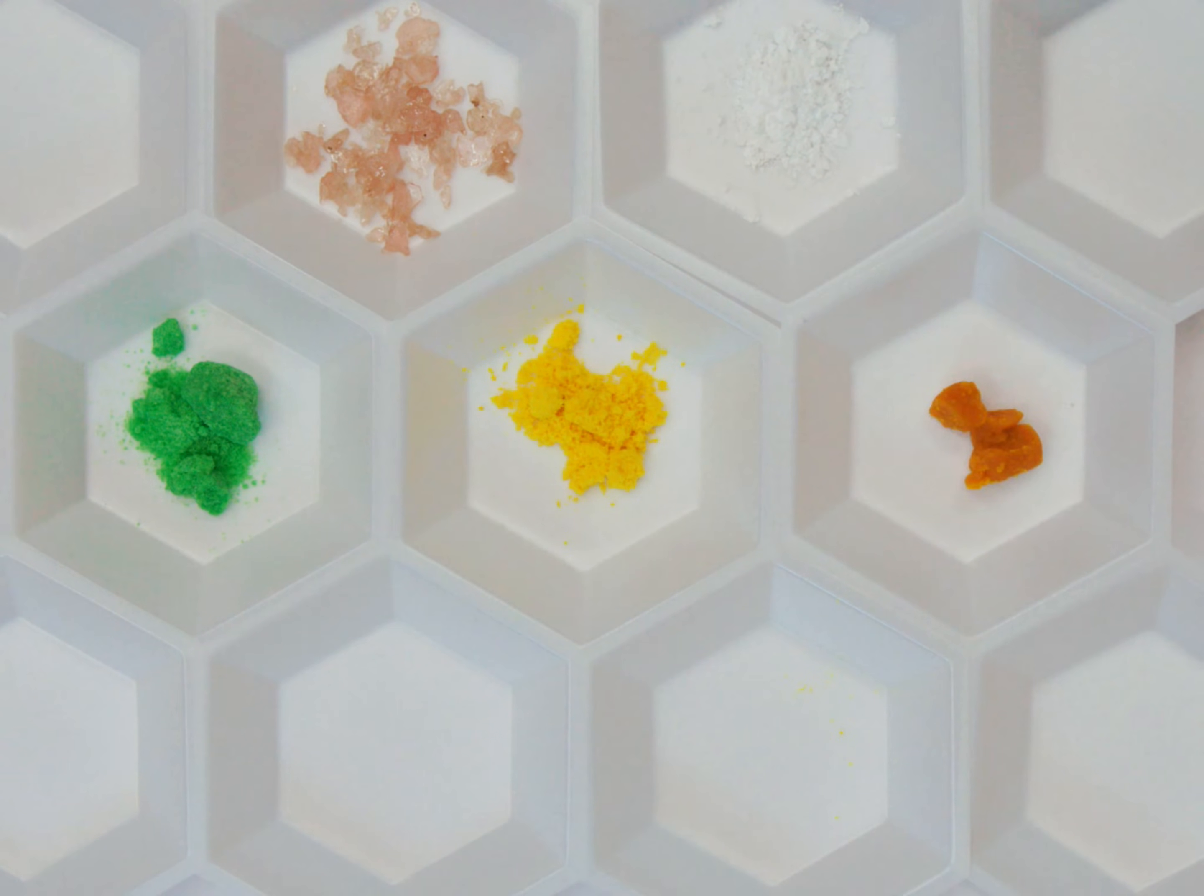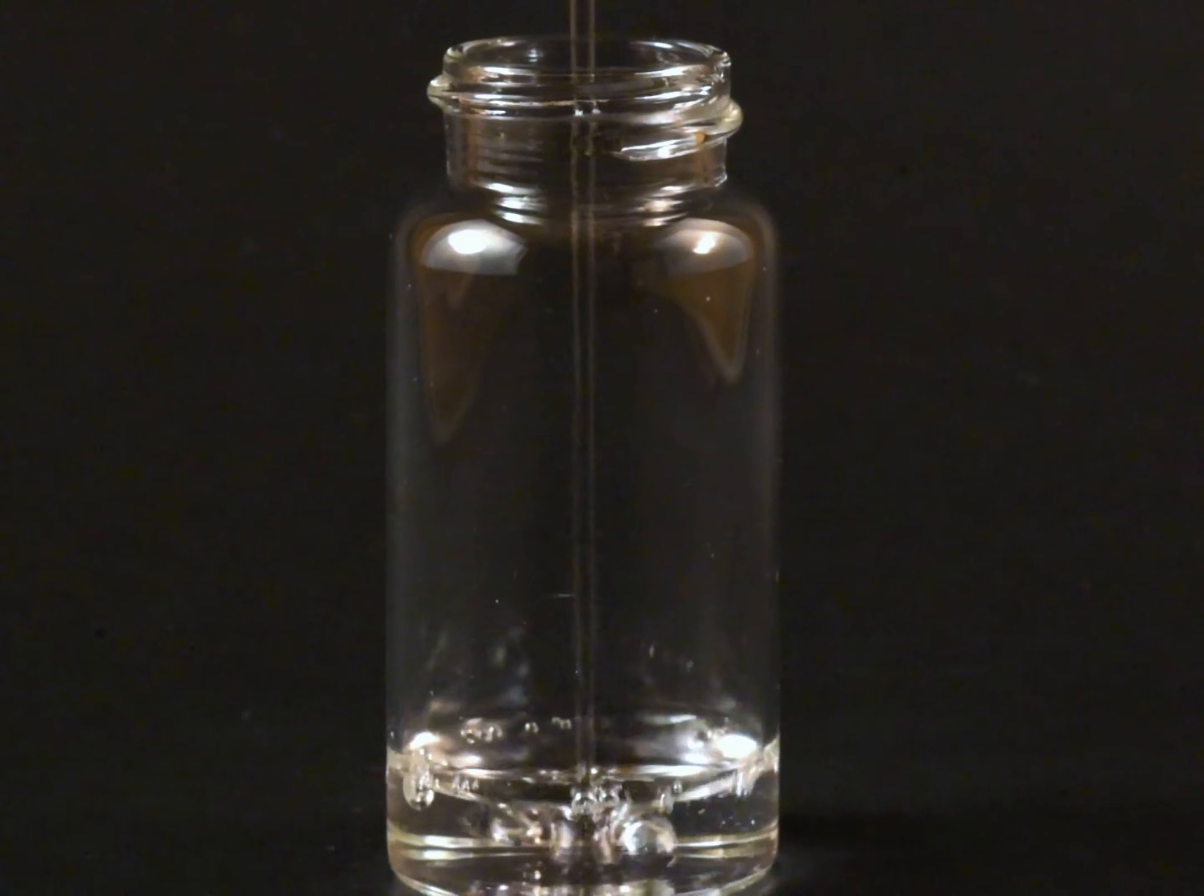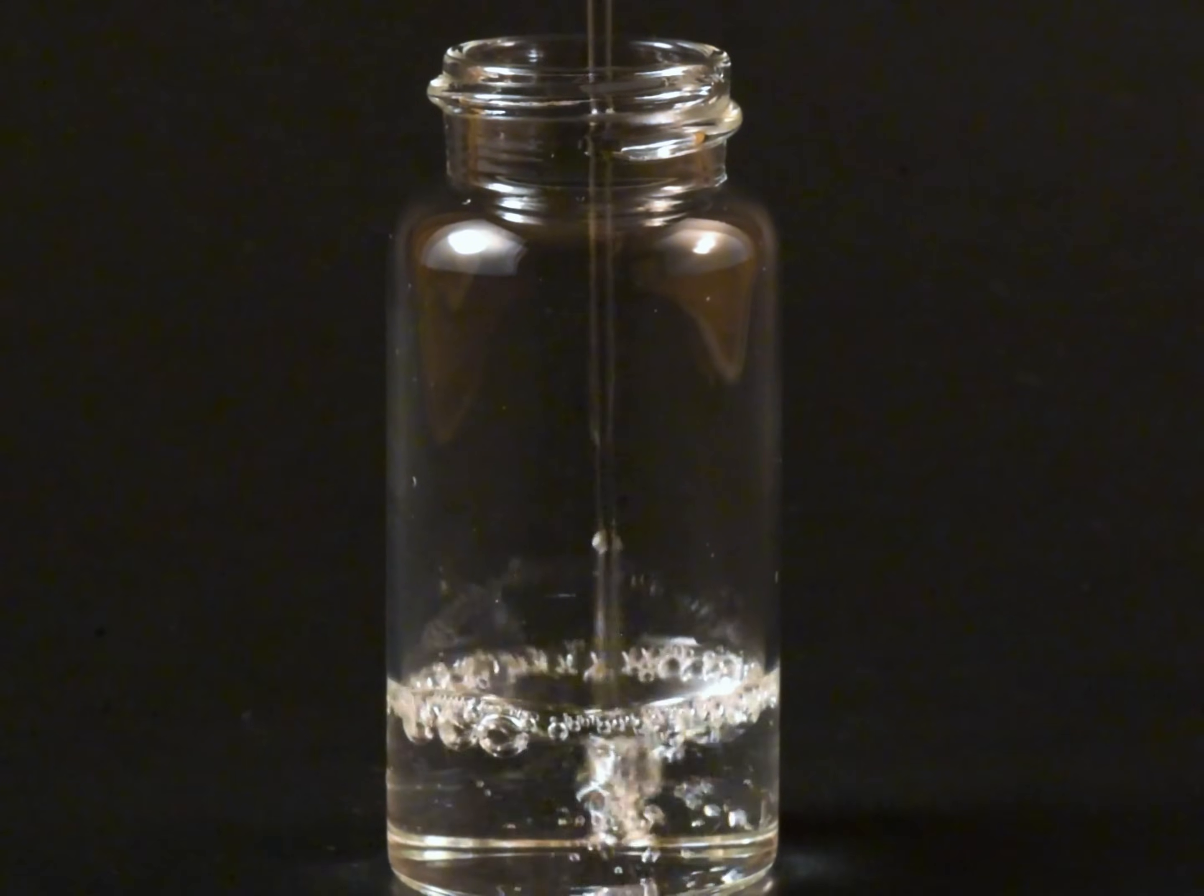Chemical gardens require two ingredients: a grain of metal salt and a clear liquid known as water glass solution. When those two ingredients come together, within seconds to minutes a chemical garden grows. This process is an example of a chemical reaction.